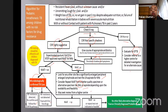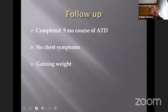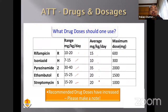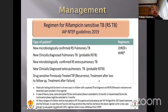This child completed 9 months of anti-tubercular therapy, had no chest symptoms, and was gaining weight — a confirmed case of tuberculosis. Note that drug dosages have changed: rifampicin is now 10-20 mg/kg, INH 7-15, pyrazinamide 30-40, ethambutol 15-25, and streptomycin 15-20 mg/kg. There has been a slight increase in dosages. Also changed this year is the treatment guideline: the CAT-2 regimen has been removed.